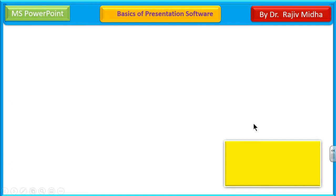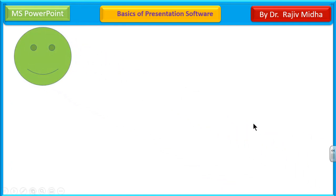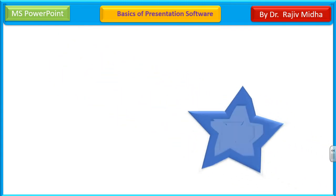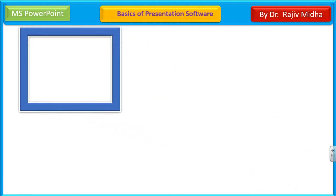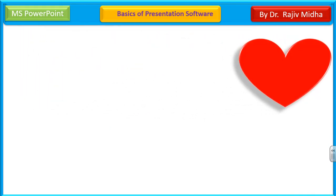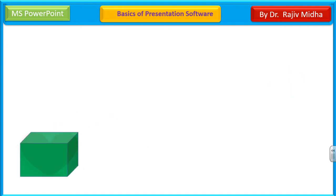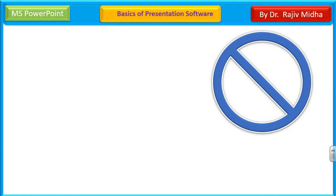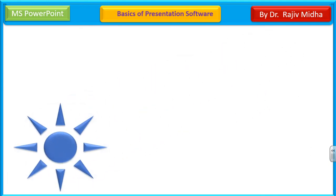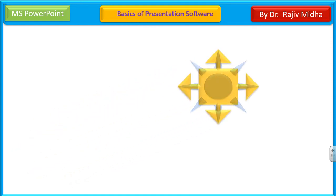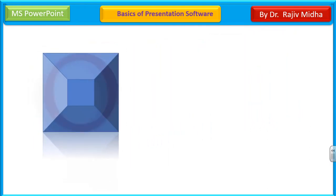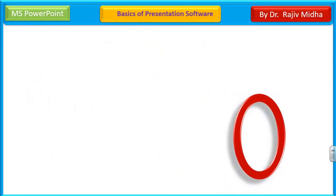میرے پاس ایک rectangle ہے — میں نے smiley میں convert کر دیا with the click of mouse۔ Now this is the star. This is a rectangle. Oh now this becomes the heart. With the click of mouse it becomes a 3D box. This is no signal. Some other object representing sun. With the click of mouse I am changing it — and this was the last.